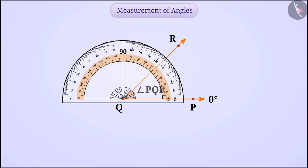Moving ahead, on this scale we will see which markings the other side of the angle is pointing to. Like here, QR is pointing to the mark 45 representing 45 degrees.